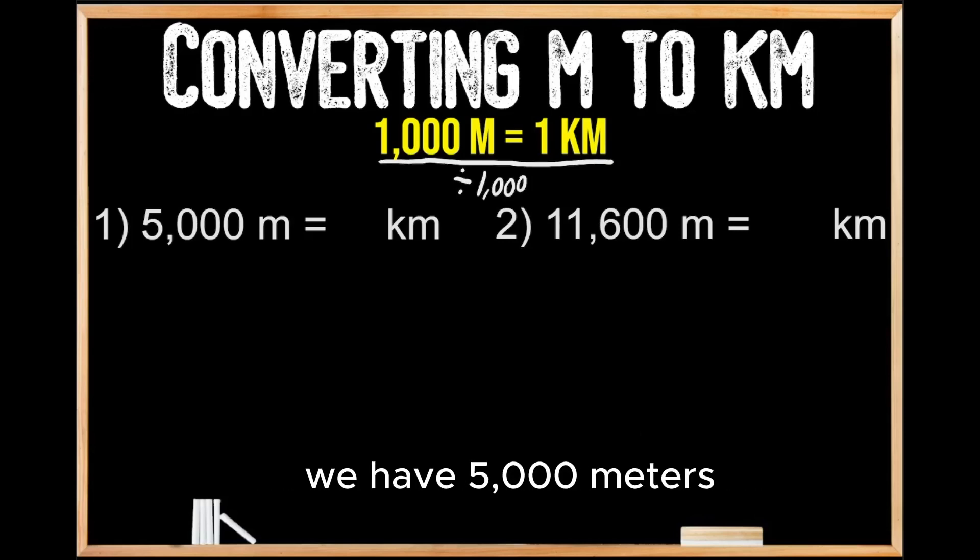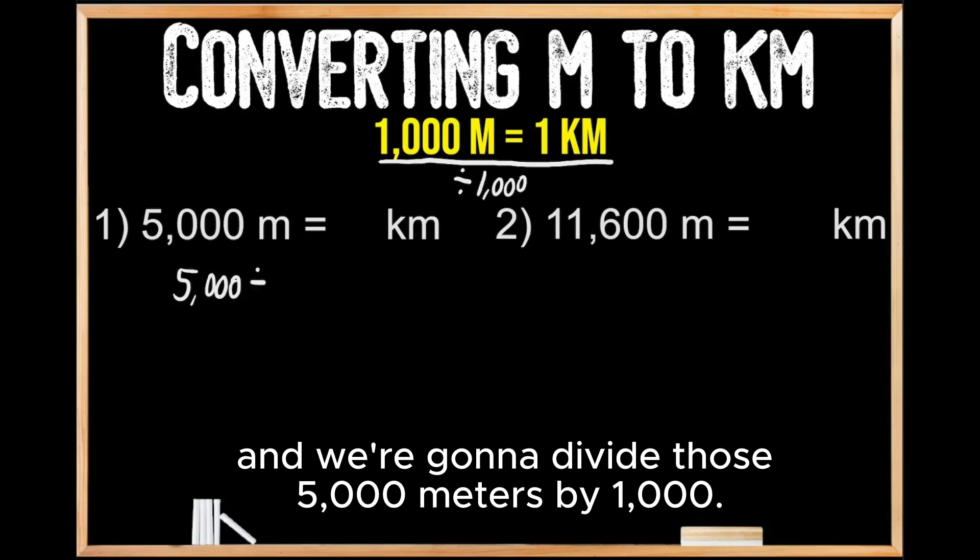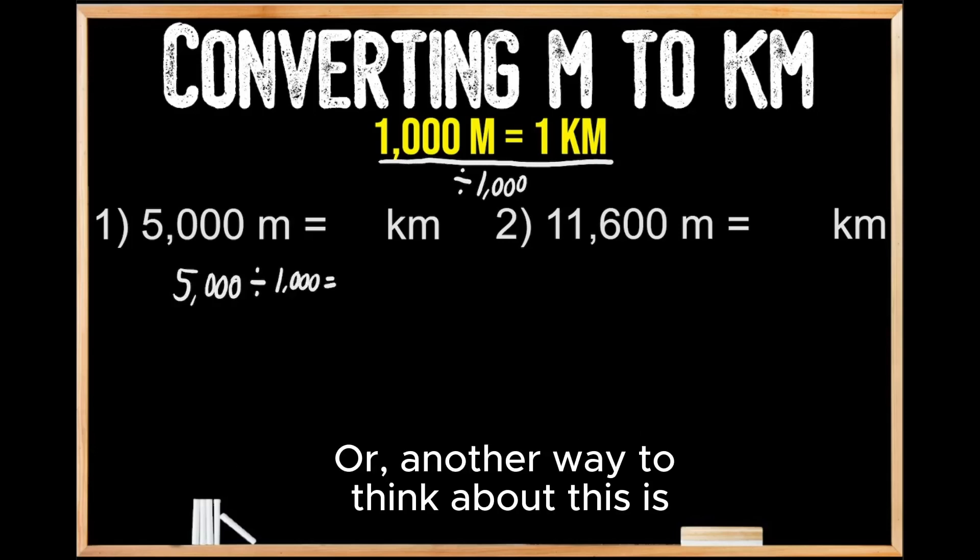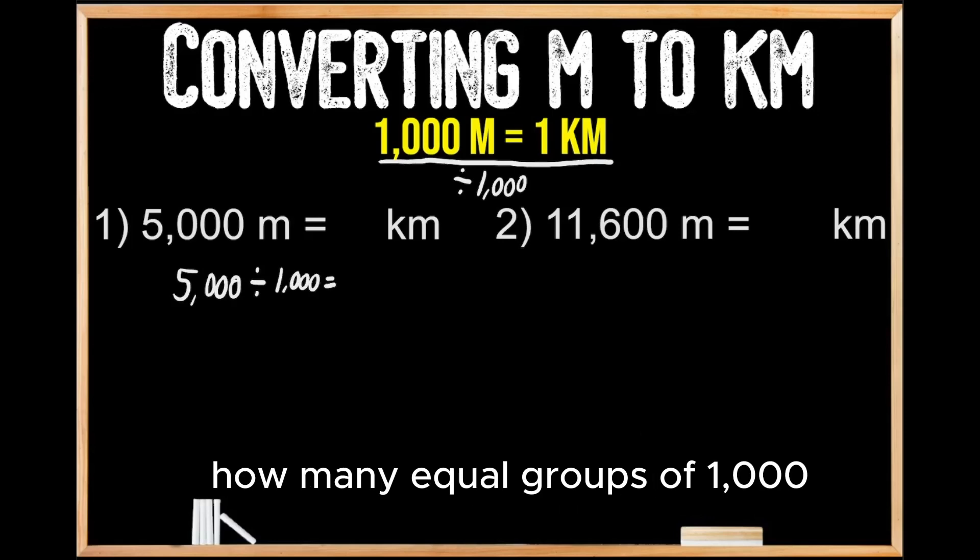For question number one, we have 5,000 meters, and we're going to divide those 5,000 meters by 1,000. Or another way to think about this is: how many equal groups of 1,000 can we make out of 5,000?